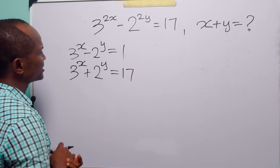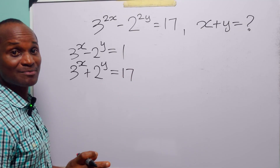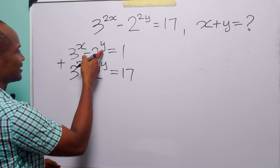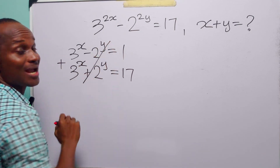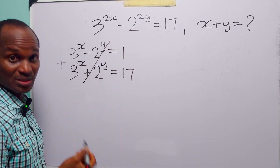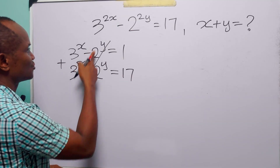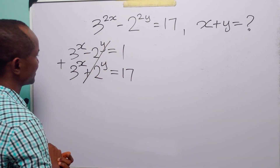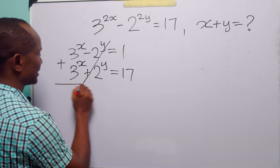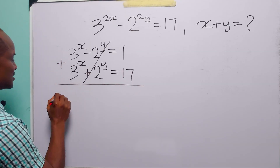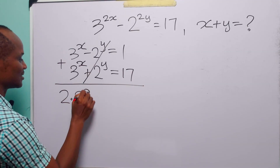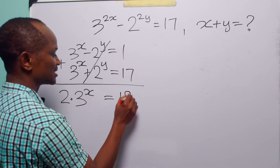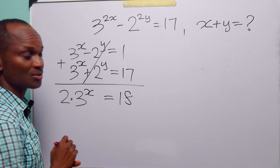To solve these two equations, the easiest method is elimination. If we add the two equations, we eliminate 2 to the power y, because minus 2^y plus 2^y equals 0. We are left with 2 times 3 to the power x, which equals 1 plus 17, giving us 18.